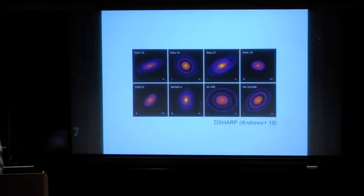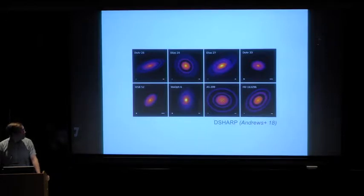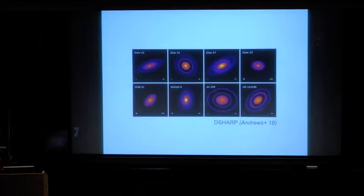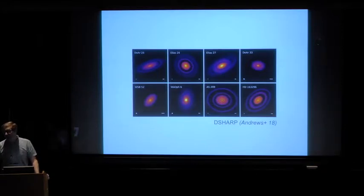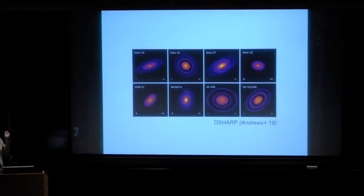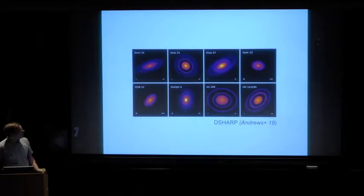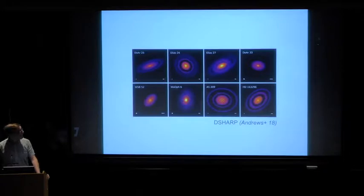One of the nice things about protoplanetary disks is that we have some very nice and recent images of those systems. These are images from the D-Sharp survey, which was published last year — just a subset of the systems that they looked at. These are images made with ALMA, so this is radio emission at a wavelength of about a millimeter. What you're looking at here is emission from dust in these disks. Scales here are 50 to 100 astronomical units. The striking thing — the main result of this survey — is that there's a lot of non-trivial structure in these systems.